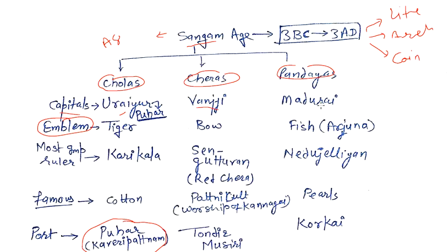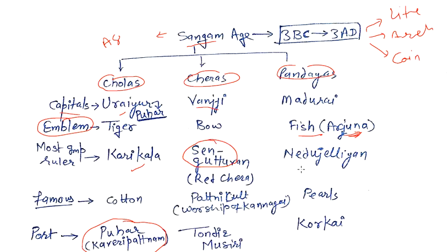You can correlate Pandya, Madurai, and fish with the story of Arjuna from the Mahabharata. Now, who were the most famous rulers? The most famous Chola ruler during the Sangam Age was Karikalan, the most famous Chera ruler was Shengatuan, and for Pandya it was Nedunjelian.